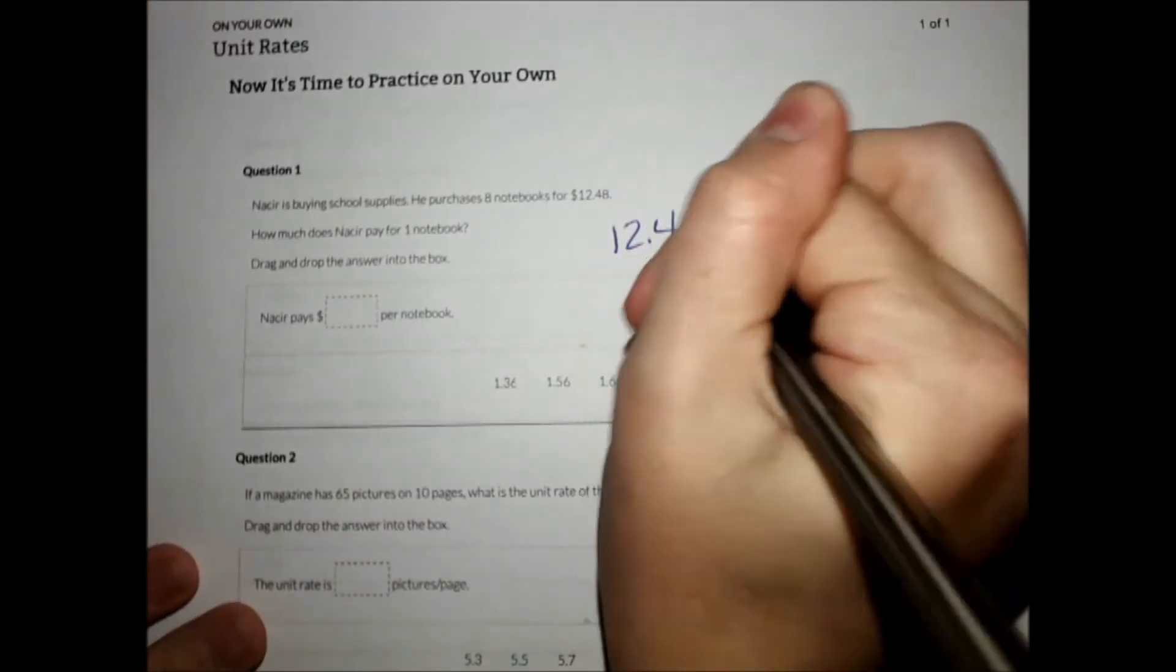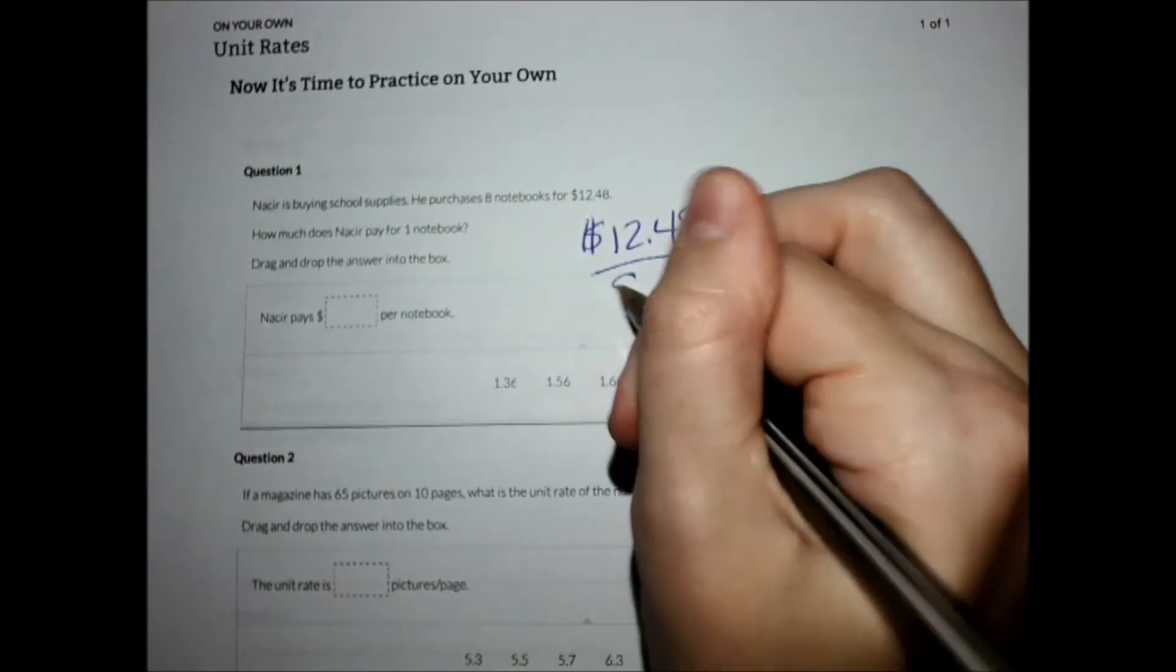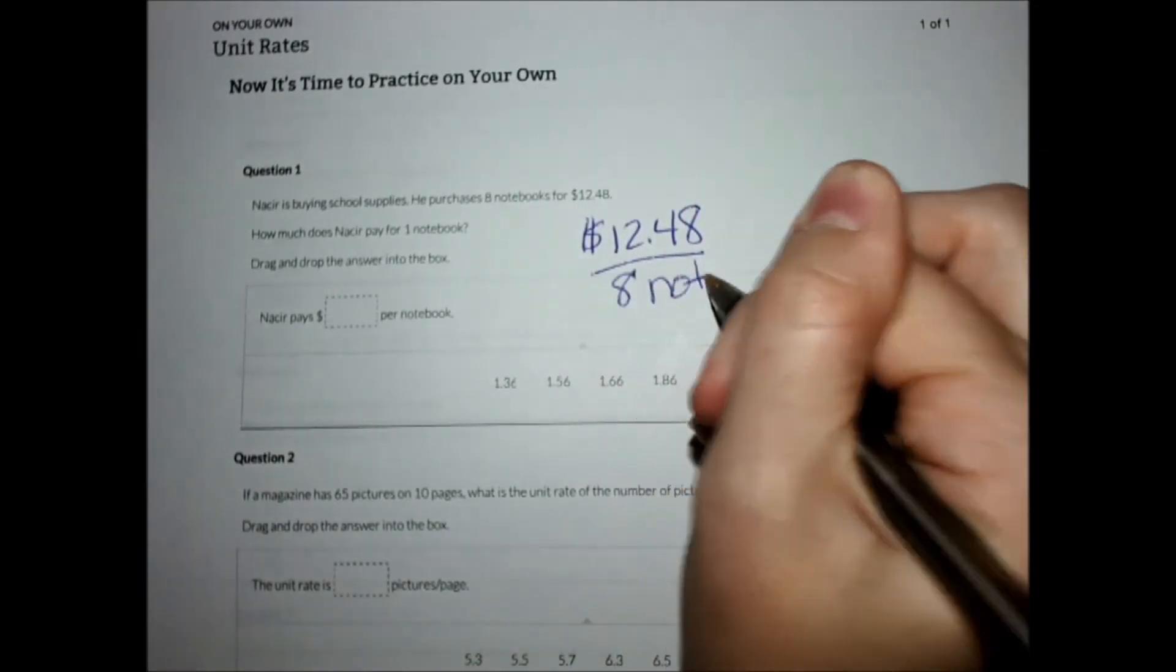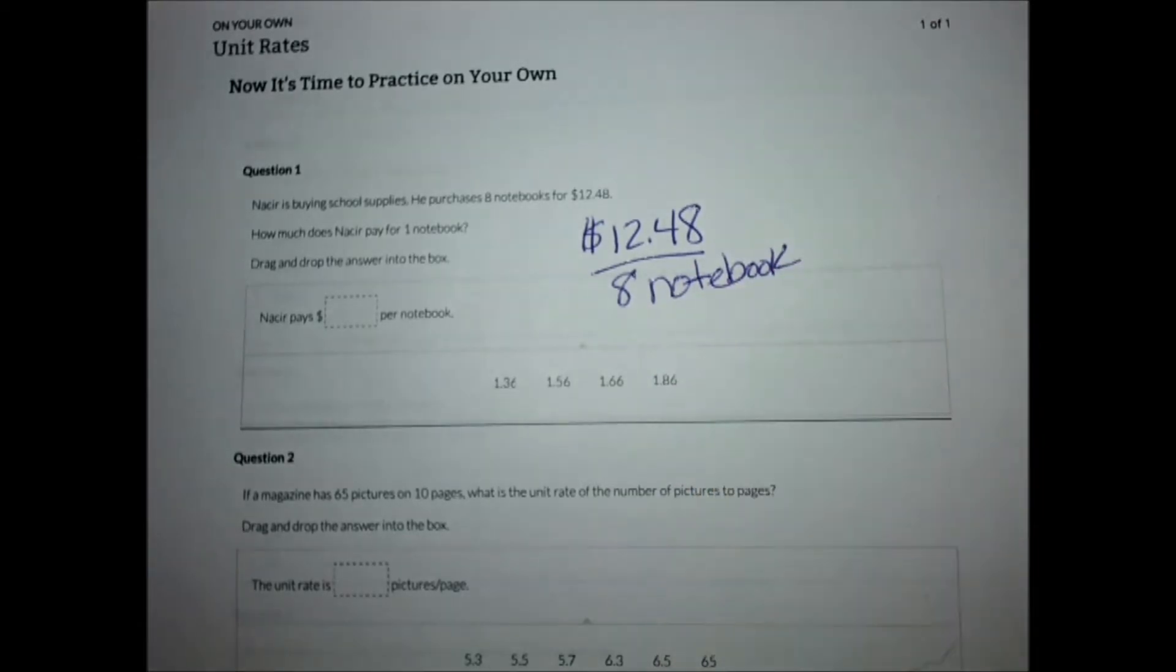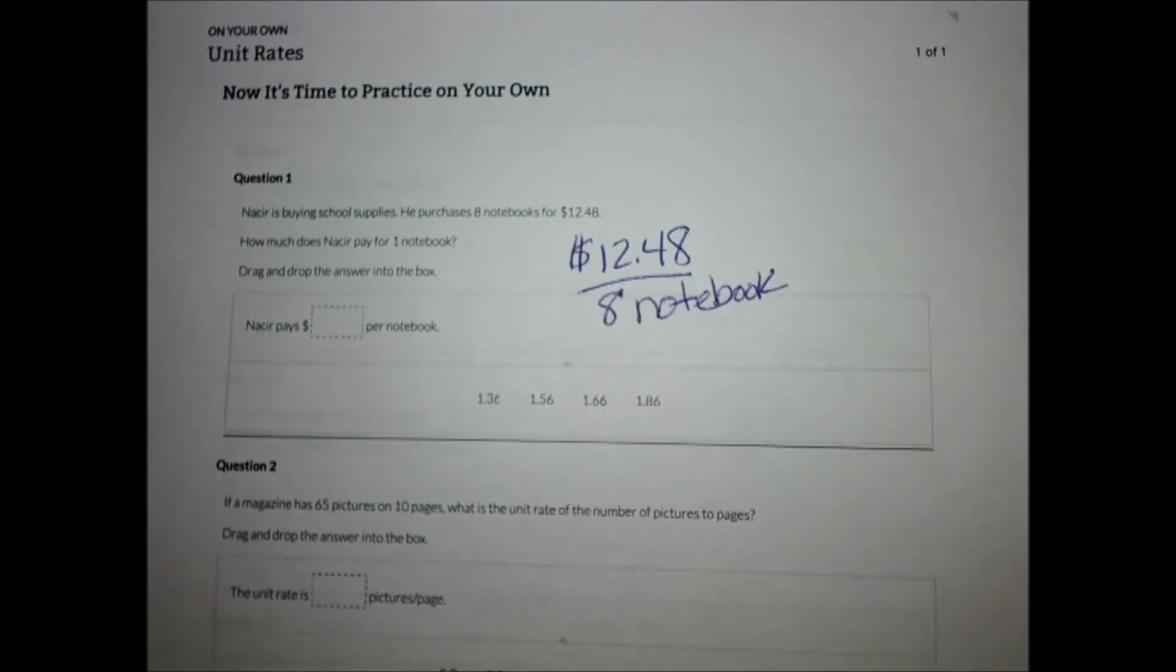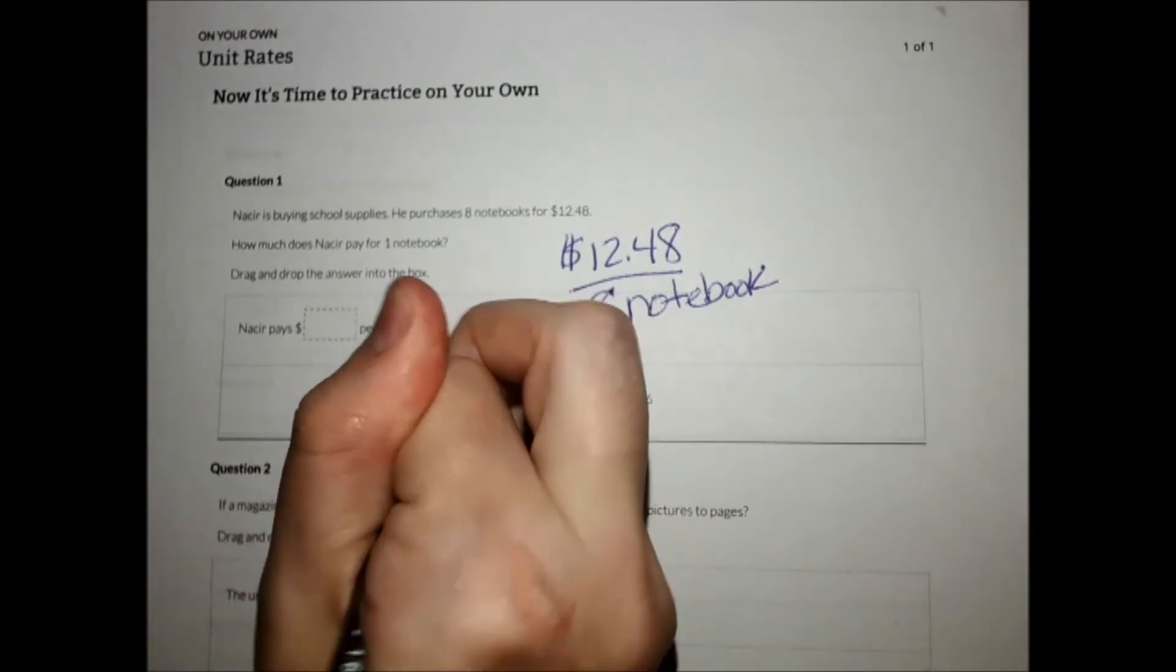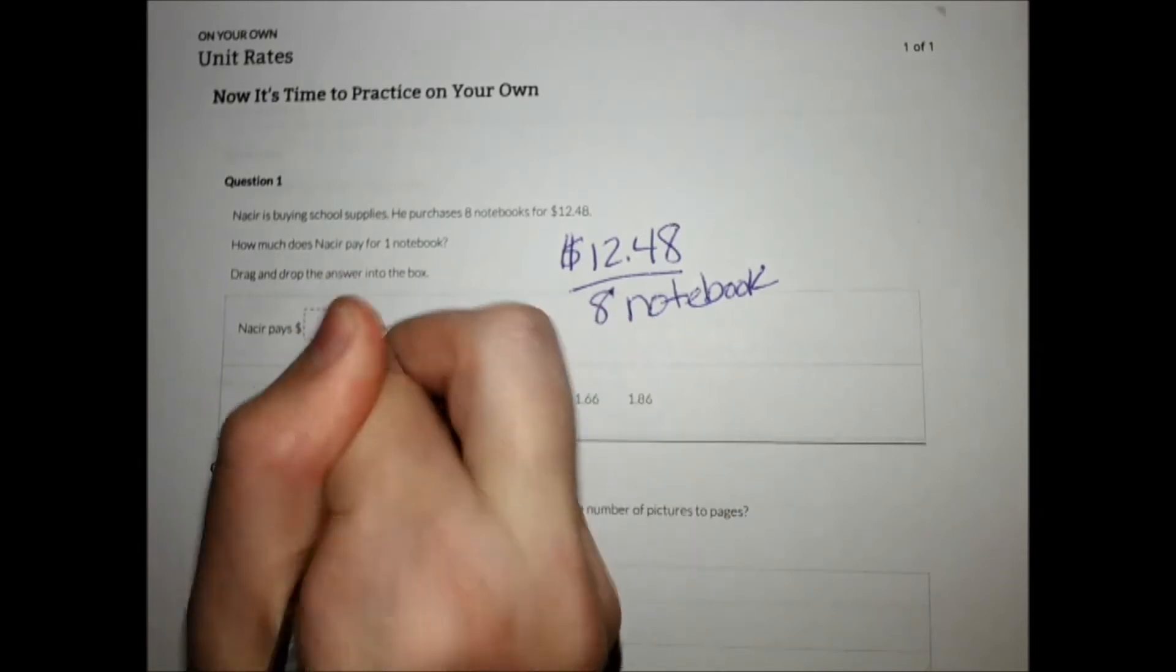The easiest way to do this is to set it up as the price per notebook. You always put the price on top divided by the number of notebooks he's getting. If you have your calculator you can do this division or you can do long division. I'm going to use my calculator just to go a little bit quicker since we've already practiced our long division. So $12.48 divided by 8 does give me $1.56 per notebook.